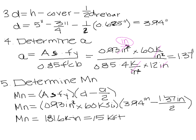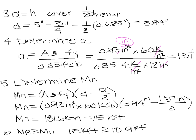Step 6: Check M sub R versus M sub U. The applied moment was 10.9 kip-feet, but the slab can resist 15 kip-feet. So M sub R is greater than or equal to M sub U — the slab is adequate. Both the moment requirement and the ACI code requirements are met.